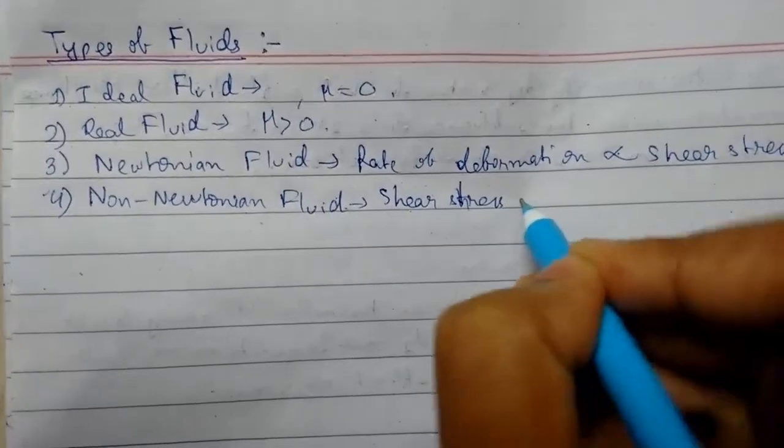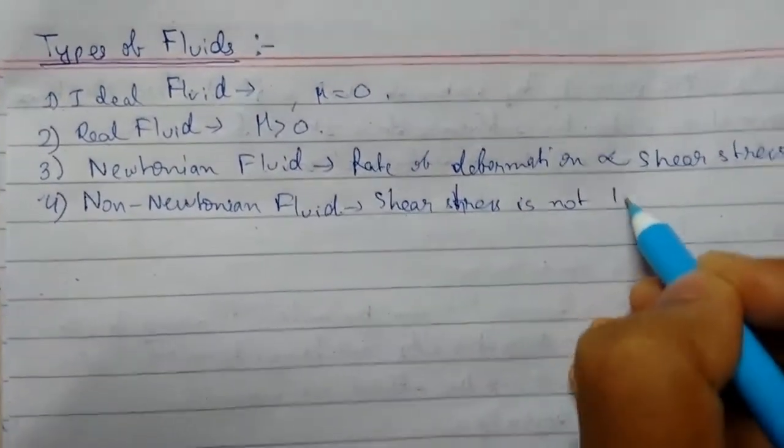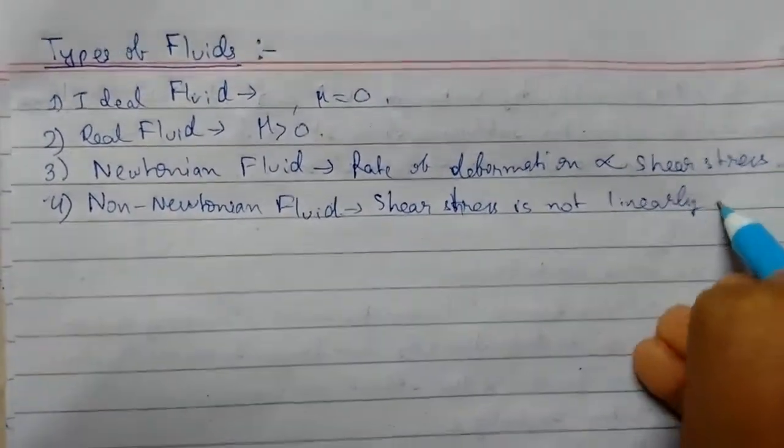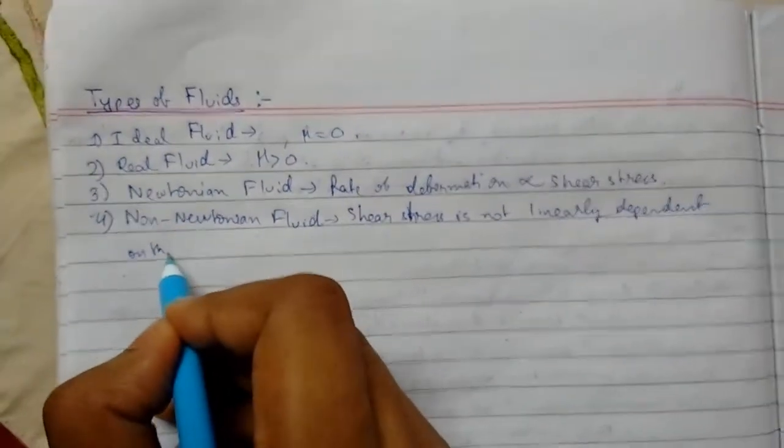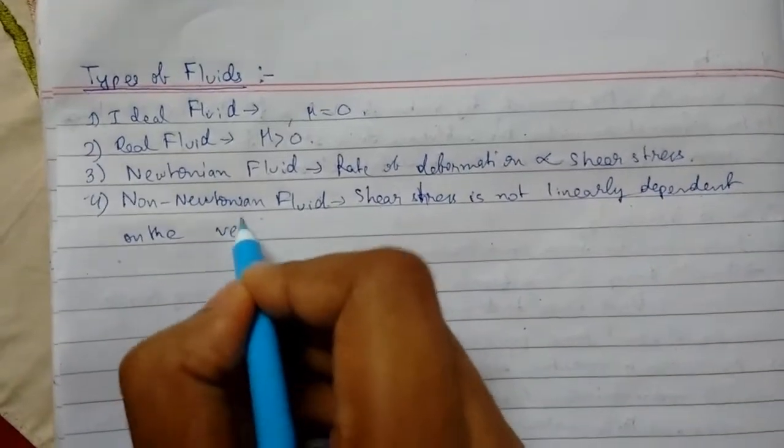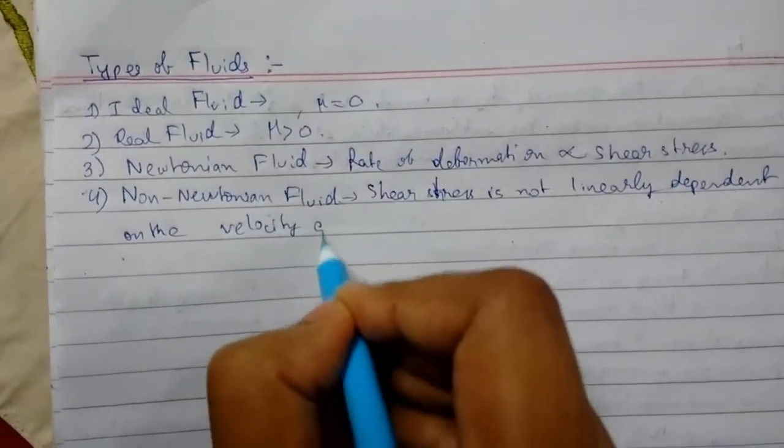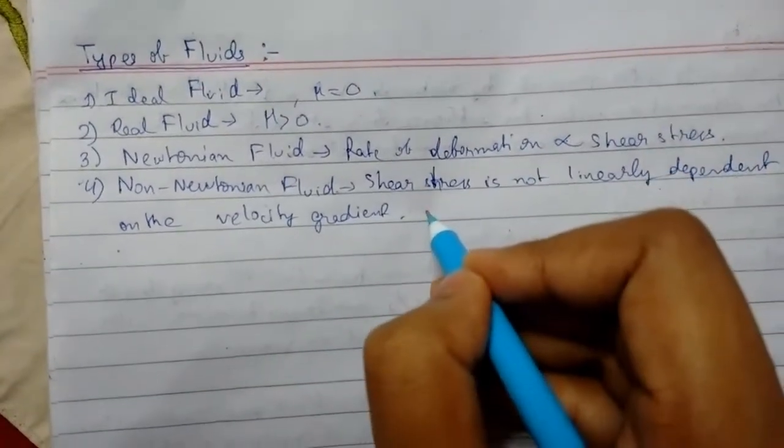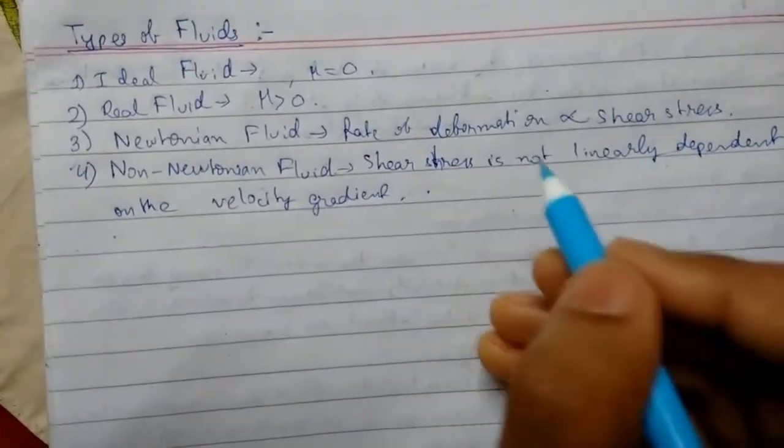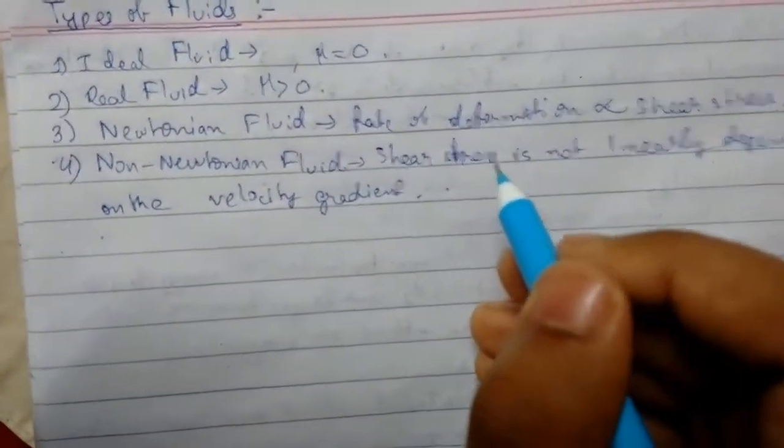Shear stress is not linearly dependent on the velocity gradient. For example, like human blood, lubricating oils and all.